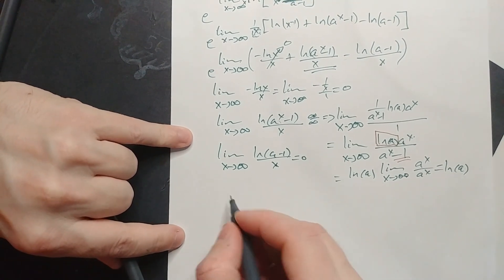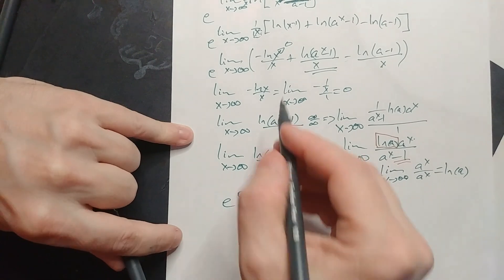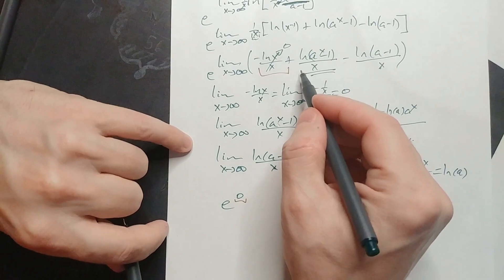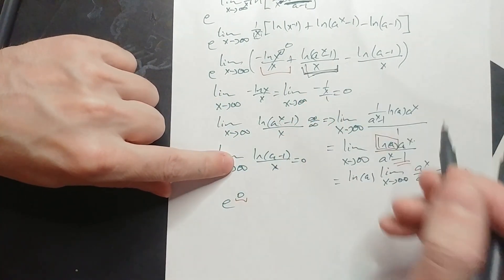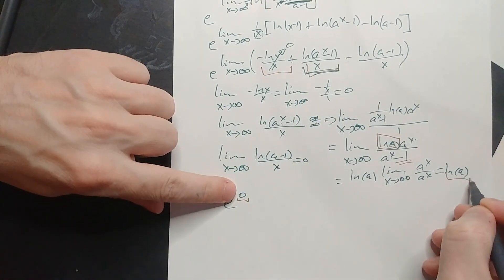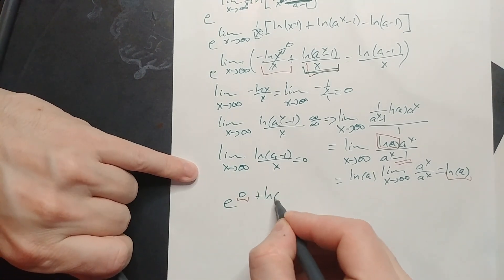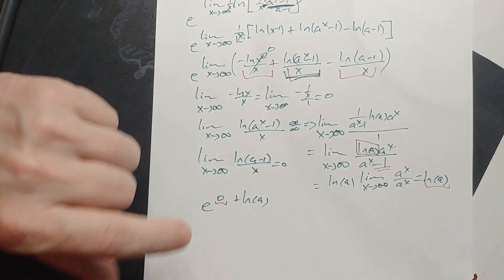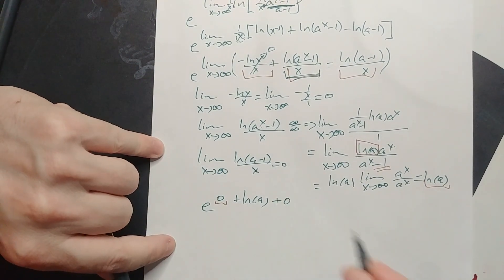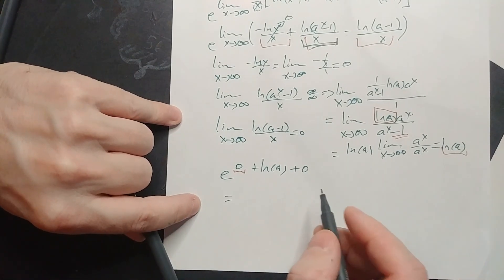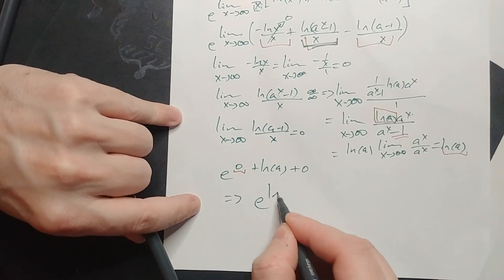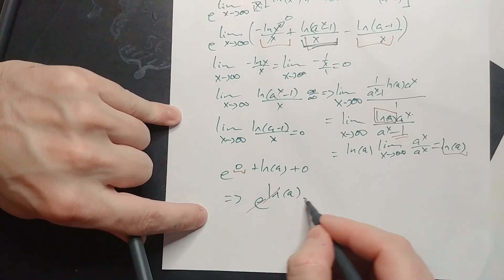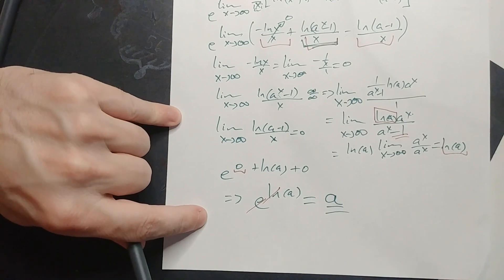Combining all three results in the exponent: 0 plus ln(a) minus 0 equals ln(a). So all that remains is e to the ln(a). Since e and ln are inverse functions, they cancel, and we're simply left with a — whatever a happens to be.